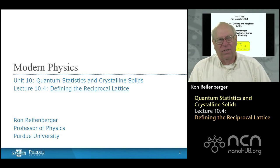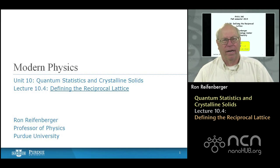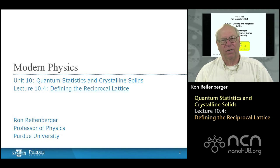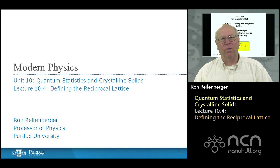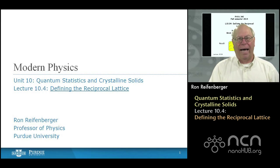If you recall in the last lecture, we defined a model to describe electron states in solids. The name of that model was the free electron model for electrons. It's a very simplistic approach and we're certainly going to discuss its implications in more detail in the coming week. But before we do that, I wanted to spend a lecture on something called the reciprocal lattice.